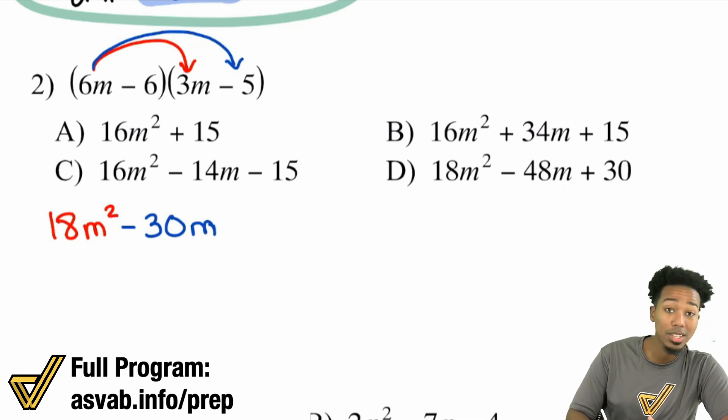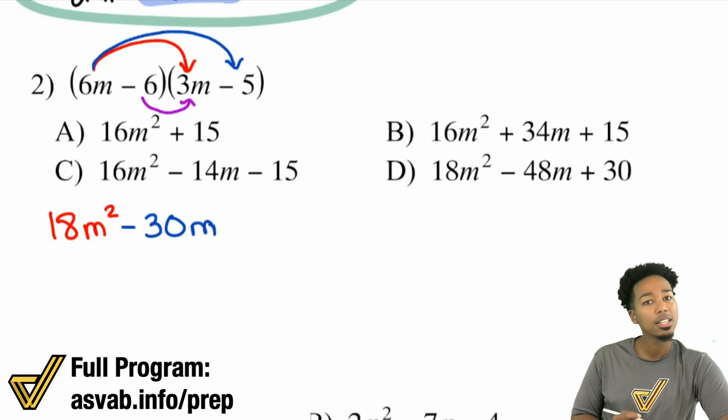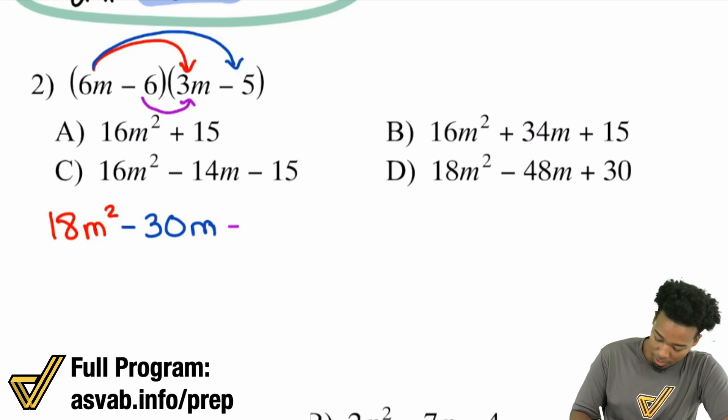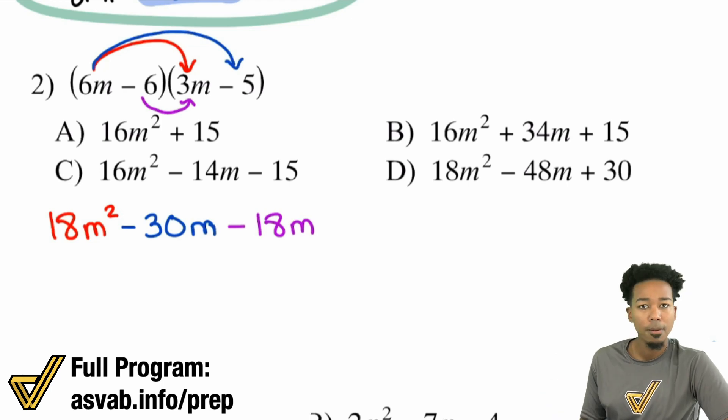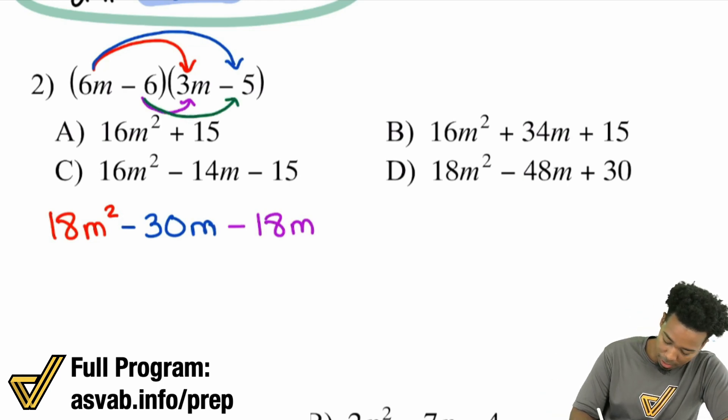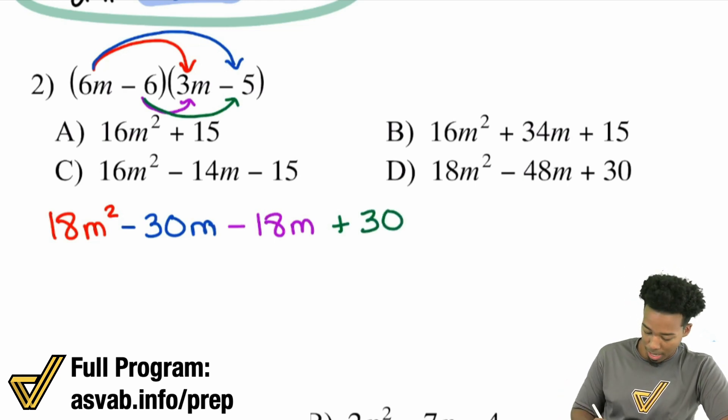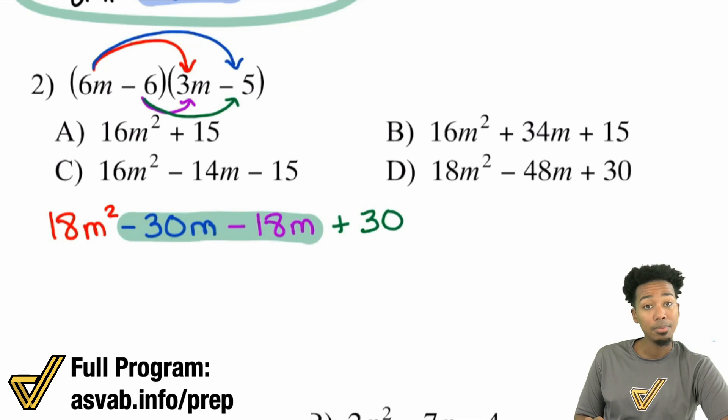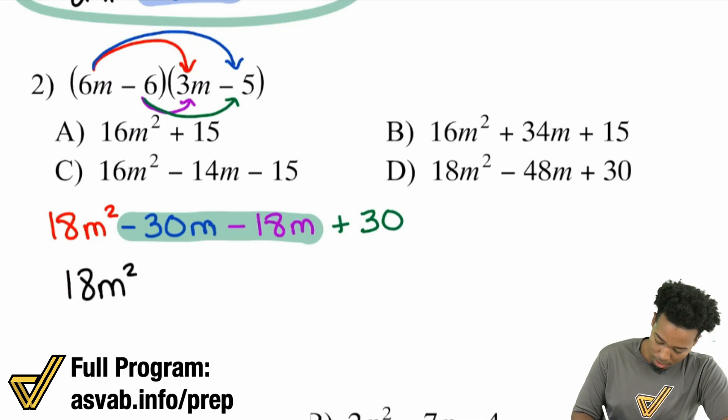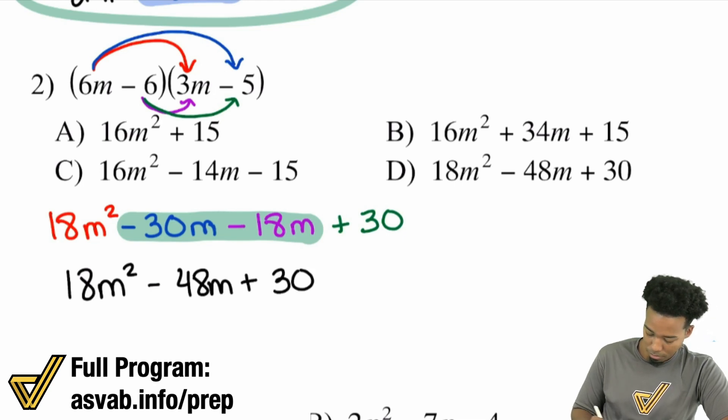Notice how you can stay calm, cool, and collected. Next up, now that we're done with the 6M, let's make sure the negative 6 multiplies with everything. Negative 6 times 3M. A negative times a positive is a negative. 6 times 3 is 18. And then you have the M there because the M doesn't multiply with anything else. Next up, lastly, we're going to do negative 6 times negative 5. A negative times a negative is a positive. And then 6 times 5 is 30. And you're good.